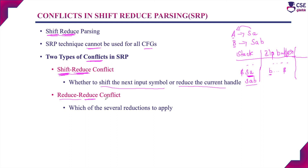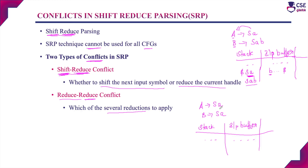Reduce-reduce conflict means that for the same handle, if two or more production rules are available, the parser is confused about which of the several reductions to apply. For example, consider the grammar: A derives SA and B derives SA. If the current element on the top of the stack is SA, the parser identifies SA as the handle. For this same handle, two production rules are available, so the parser gets confused whether to reduce the handle to A or to B. This conflict is called reduce-reduce conflict.